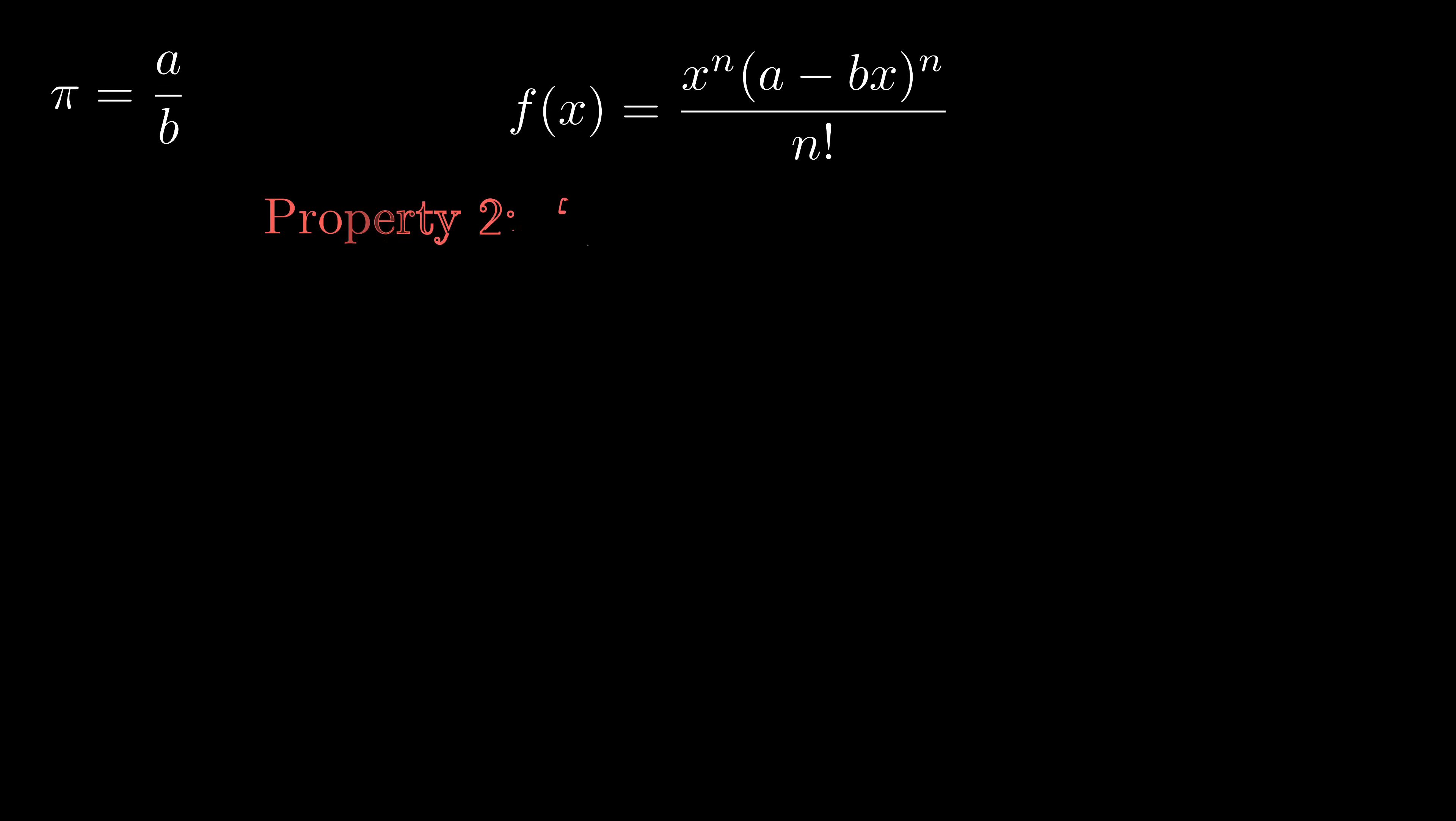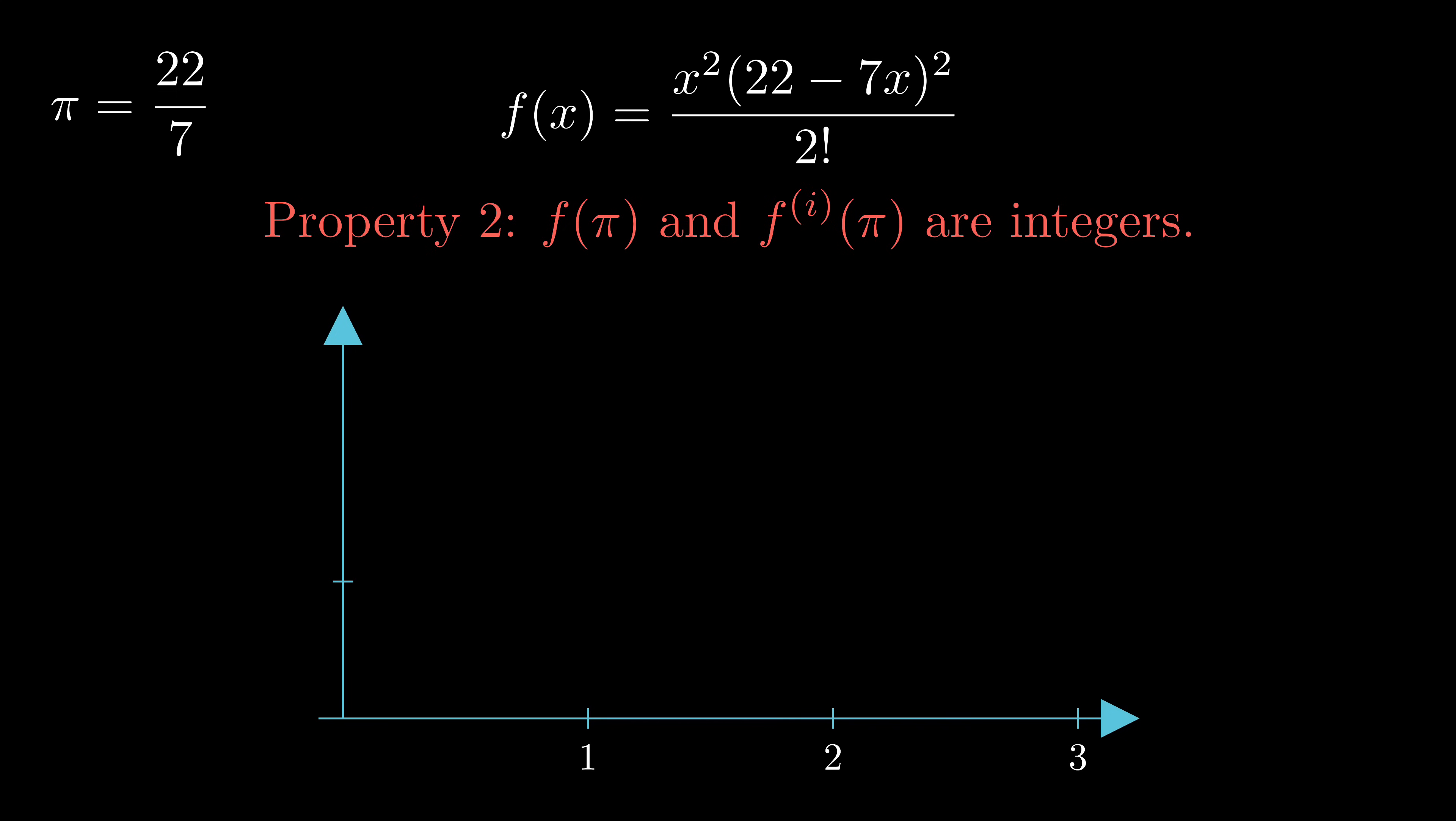Let's look at our second property. f(x) and its derivatives are not only integers at zero, but also at pi. Let's plot f(x) utilizing the classic approximation 22 over 7. f(x) is symmetric, and the axis of symmetry is x equals 11 over 7.